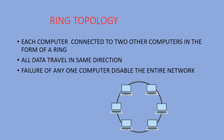Next is ring topology. In ring topology, you can see a ring or circle shape structure. Each and every computer is connected to two other computers — one on its left and one on its right — forming a ring structure. Data travels in only one direction. If any one computer on the network fails, the entire network gets disabled and the topology fails.